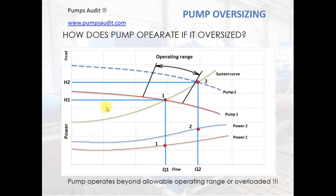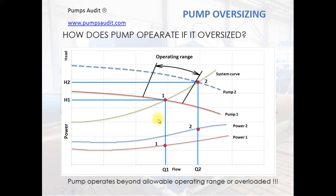Pump number one has appropriate parameters. If pump number one had been selected, the operating point would be number one, laying within the operating range. But pump number two has been selected. This pump has a higher head and the same flow. The operating point for pump 2 is point 2, and it lays outside the operating range in the area of overloading.